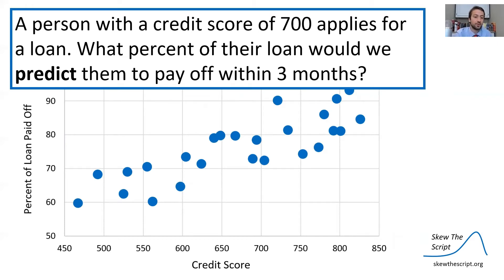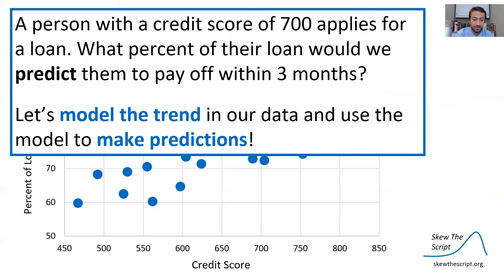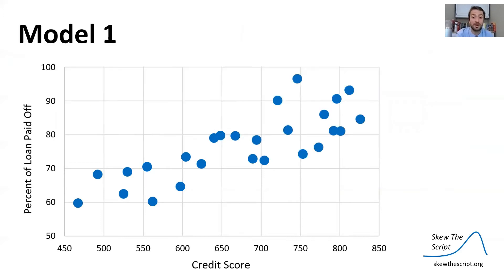One example to think about: a person with a credit score of 700 applies for a loan. What percent of their loan will we predict them to pay off within three months? We can model the trend in our data and use this model to make predictions about someone applying for a loan.